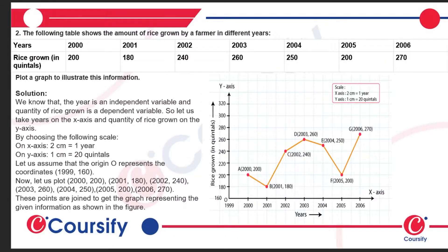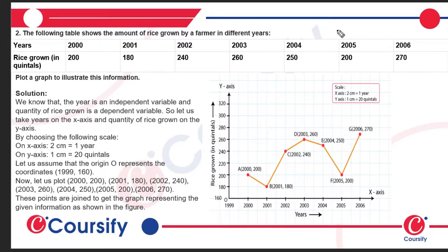Question number 2. The following table shows the amount of rice grown by a farmer in different years. Year 2000: rice grown 200; 2001: 180; 2002: 270; 2003: 260; 2004: 250; 2005: 200; 2006: 270. Year is the independent variable.